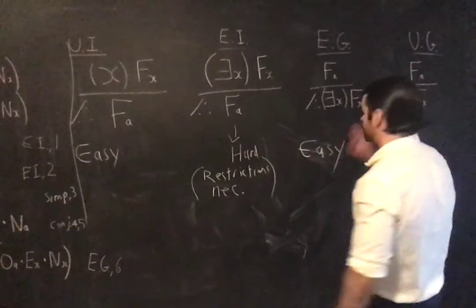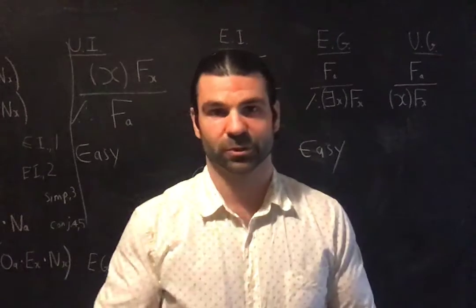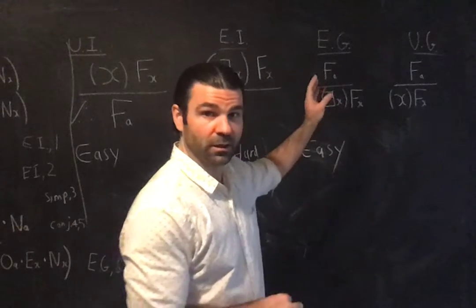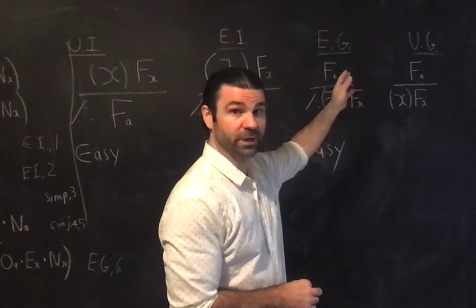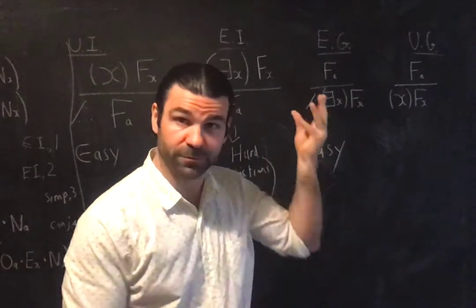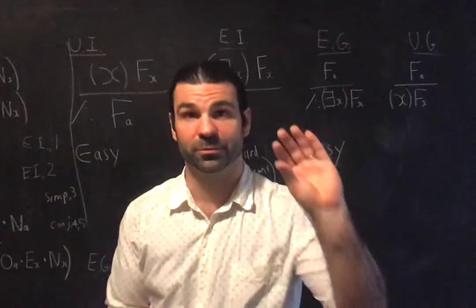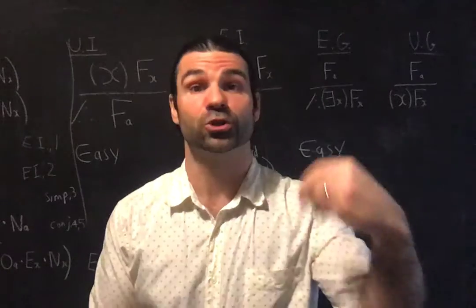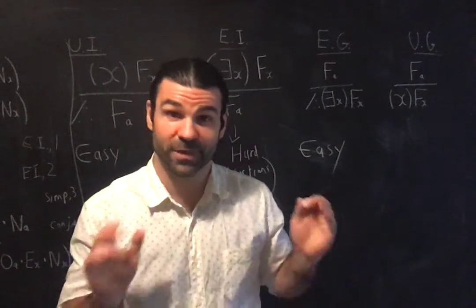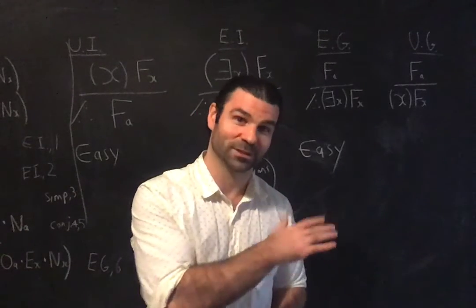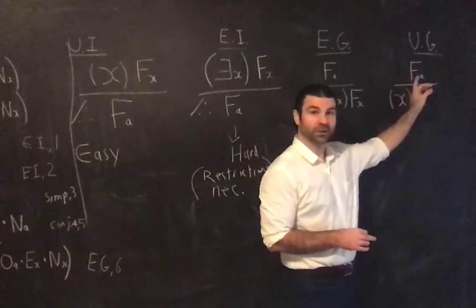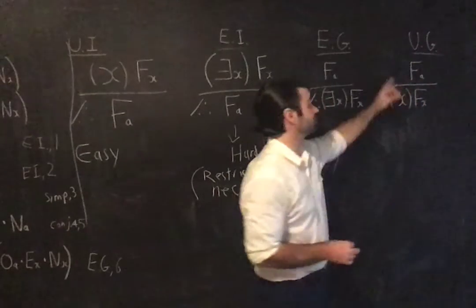What about universal generalisation? What does this rule allow us to derive according to its name? It does, in fact, allow us to infer from a particular instance that the propositional function Fx is true of a particular individual — here, A for Andrew — to this propositional function being true of all beings. The rule allows me to infer from the propositional function being true of some individual.